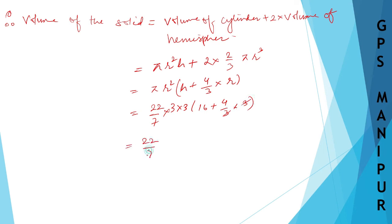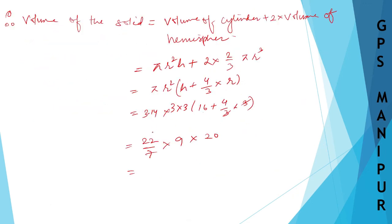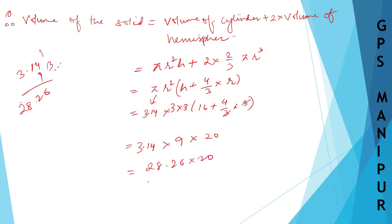So, 3.14 into 9 gives 28.26. Then 28.26 into 20: multiplying gives 565.20 centimeters cubed. This is the answer, and the answer is correct.